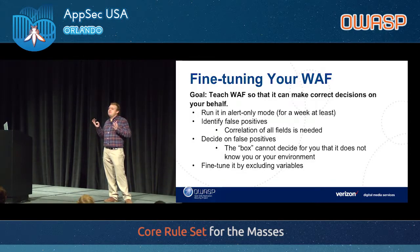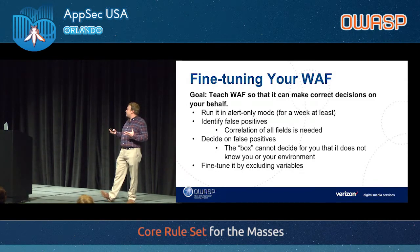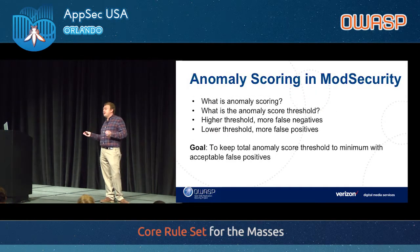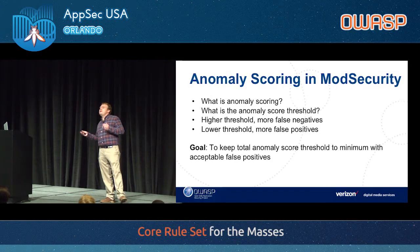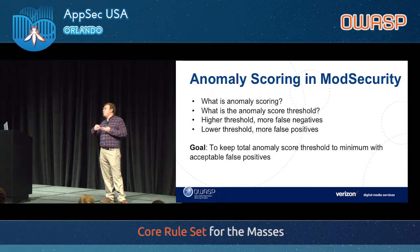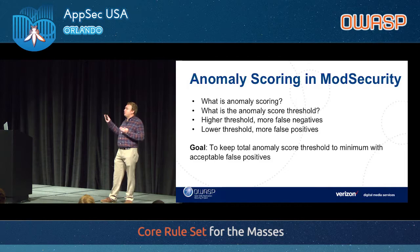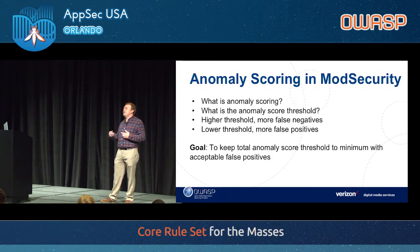The WAF cannot make the perfect decision for you — it needs your guidance. Once we've decided what a false positive is, we can start excluding things. One thing about mod security that I think is great is the anomaly scoring threshold. It basically starts at one and goes as high as you want, and it's a threshold that must be met for the WAF to consider a request malicious. If the threshold is lower, it takes less for the WAF to deem something malicious. If the threshold is set at 20, it would take far more rules triggering to deem an alert malicious.